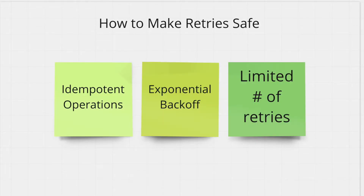If we decide to adopt retrying whenever a service call fails, there are a few things you should keep in mind. The first one is keep your operations idempotent. Given you're retrying after a failure, there is the potential that you will be doing the same task on service B all over again. The first request may have actually succeeded and carried out some logic, but A does not know that. So when A kicks up another request, the same operation happens on B again, which is why idempotency matters.